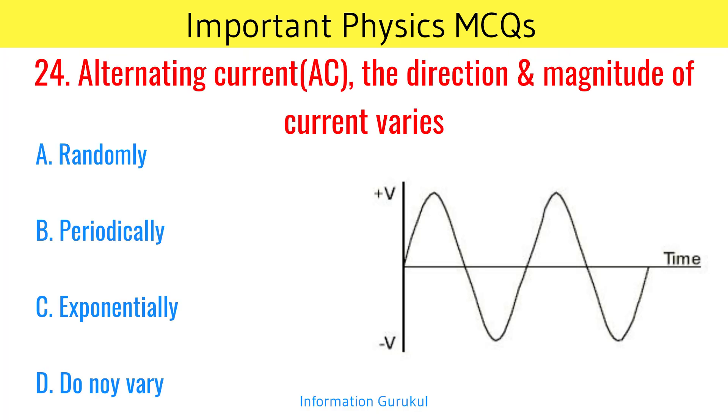Alternating current: the direction and magnitude of current varies periodically.